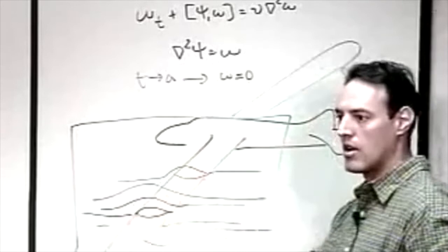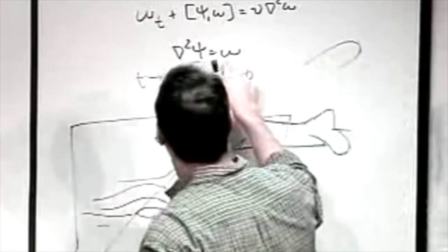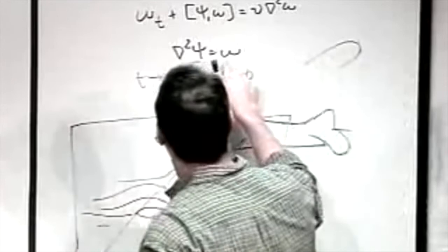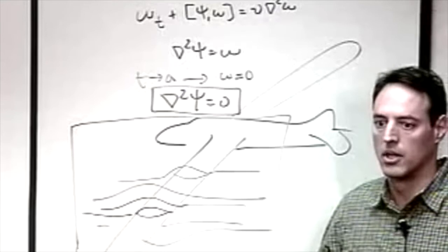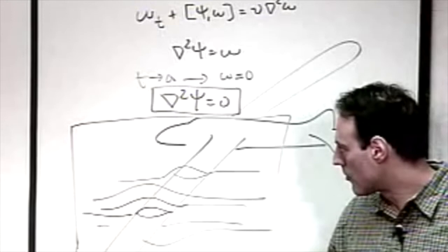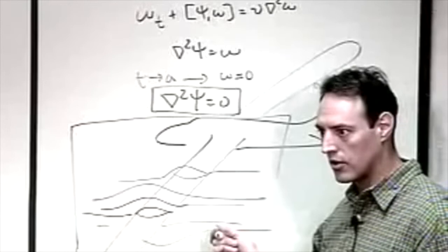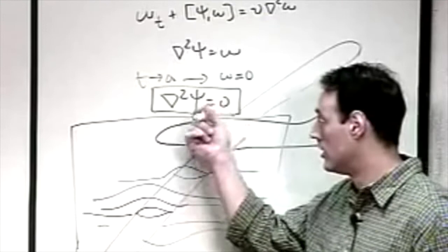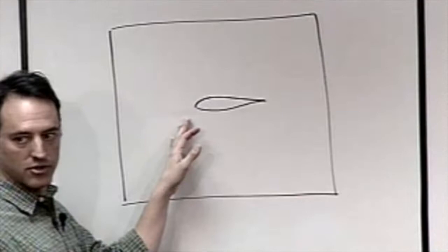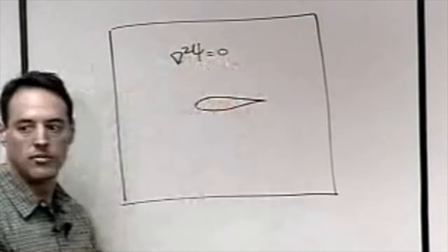You've basically gone far enough out that all the vorticity has settled out. What's left over? Omega goes to zero and you still have the stream function equation to be satisfied: the Laplacian of the stream function equals zero. So now I want to solve this Laplacian(psi) = 0 problem for the steady state flow. Not only do I have the outer boundary, but I also have a wing cut into the domain.